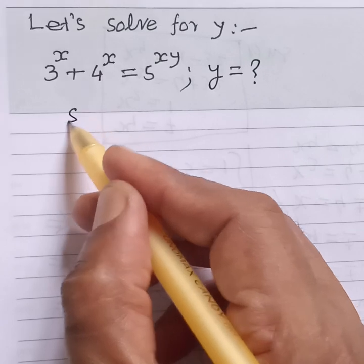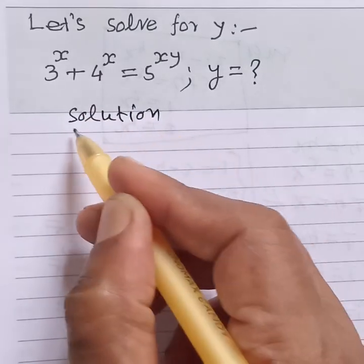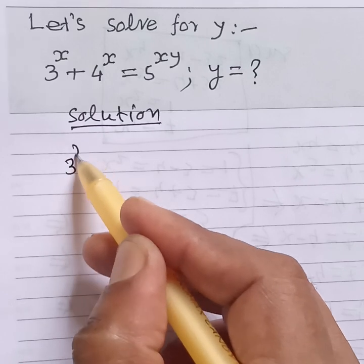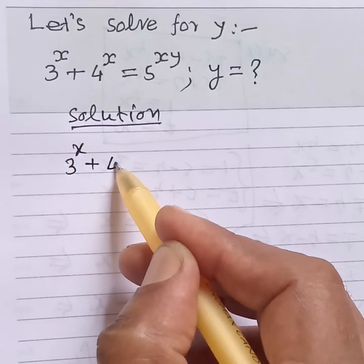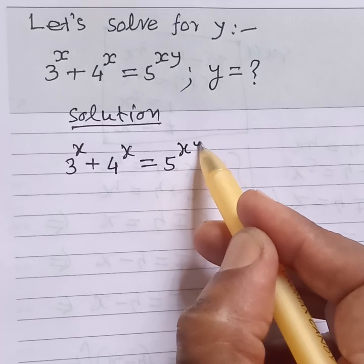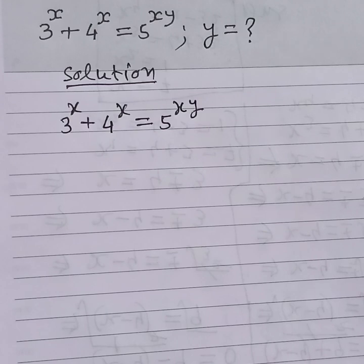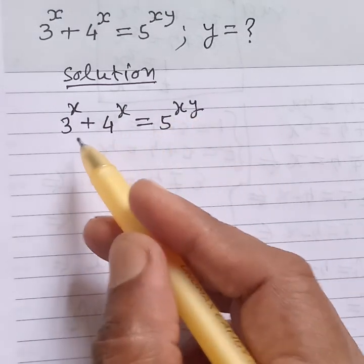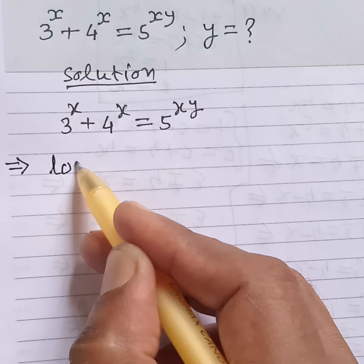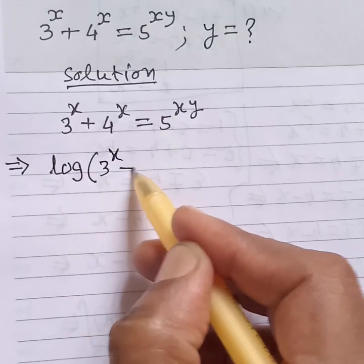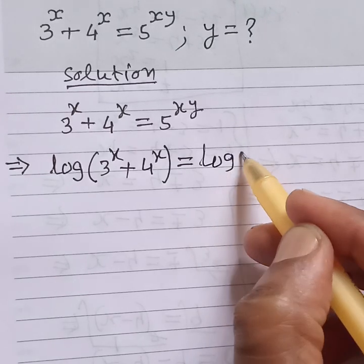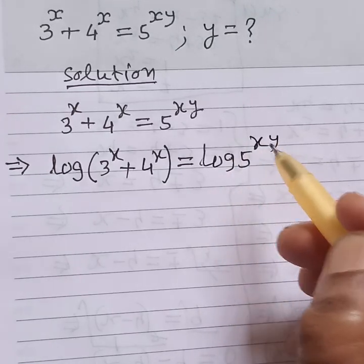Solution. Given 3 to the power x plus 4 to the power x is equal to 5 to the power xy. Taking log both sides, then we get log of 3 to the power x plus 4 to the power x is equal to log of 5 to the power xy.